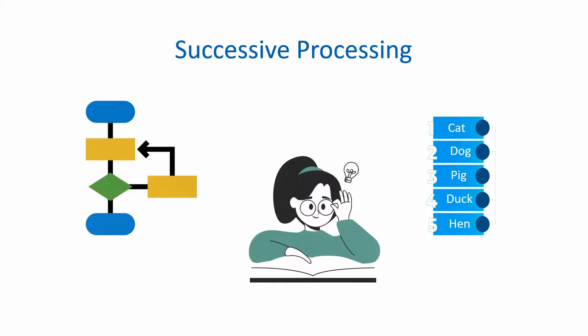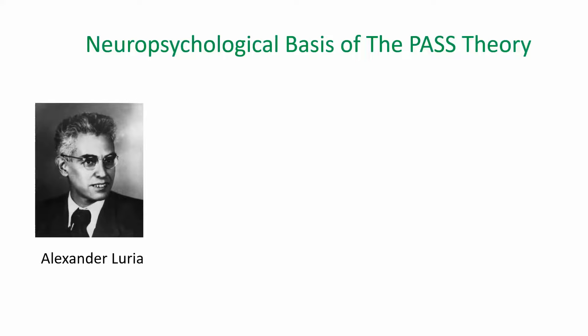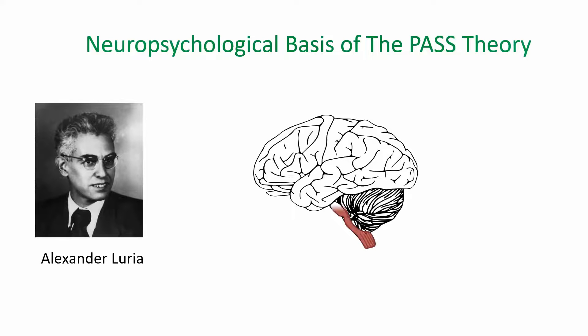The PASS theory is based on the work of Russian neuropsychologist Alexander Luria, who identified three functional units in the brain that are crucial for different types of cognitive activities.